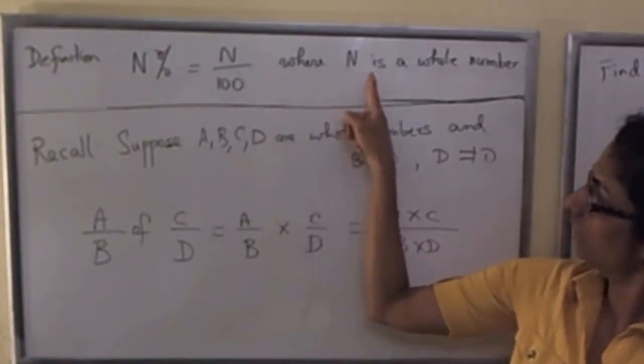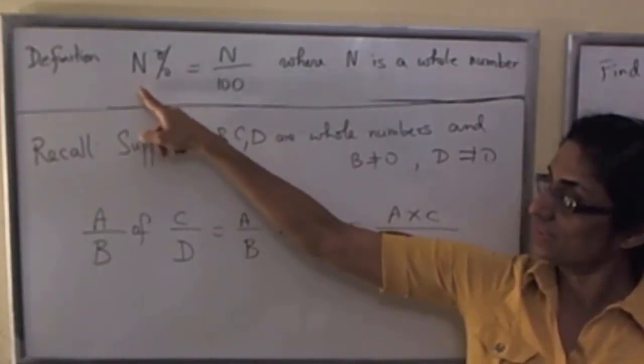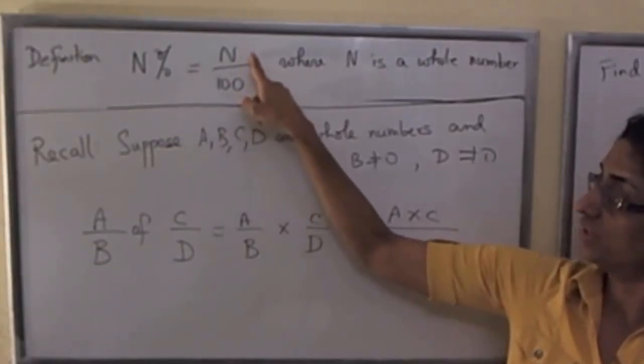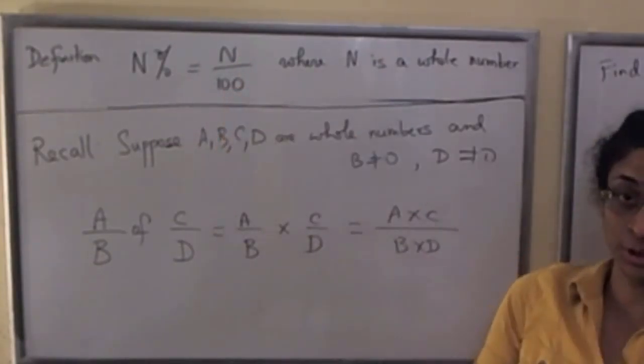Here's the definition. If N is a whole number, N percent is simply the fraction N over 100, 100 in the denominator.